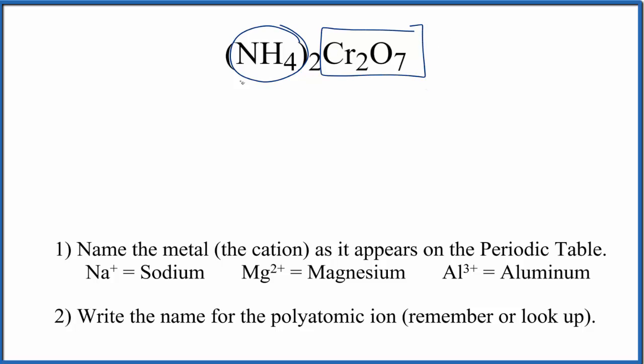So you really have to recognize that we have these ions here, and either you memorize the names, or if you're allowed, you look them up. So normally, when we have a polyatomic ion, we'll write the name of the metal, and then the polyatomic ion.